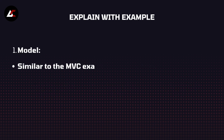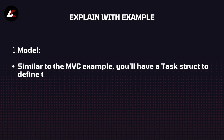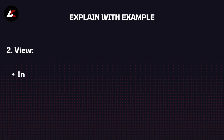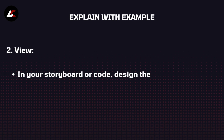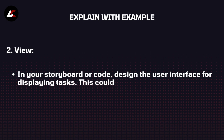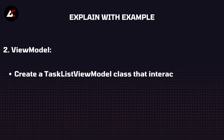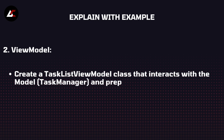I will explain with the example of a task. The Model, similar to the MVC example, will have a Task struct to define the properties of the task and a TaskManager class to manage the tasks. For the View, in your storyboard or code, design the user interface for displaying tasks — this could be a table view. For the ViewModel, create a TaskListViewModel class that interacts with the TaskManager and prepares the data for the view. It should expose properties and methods that the view can bind to.